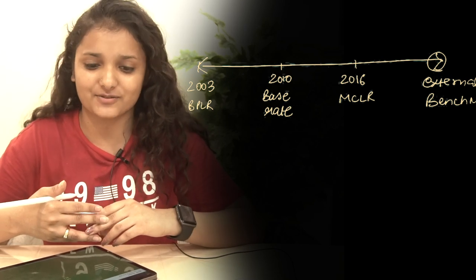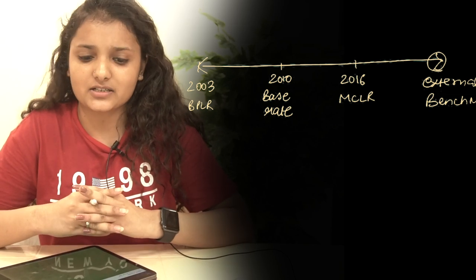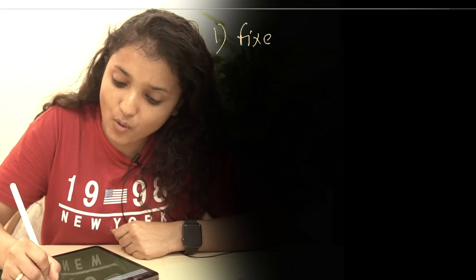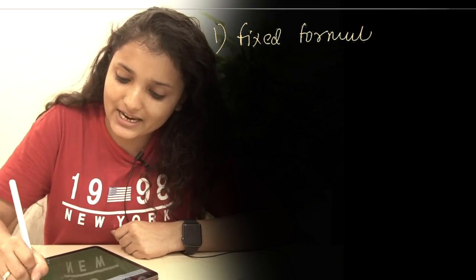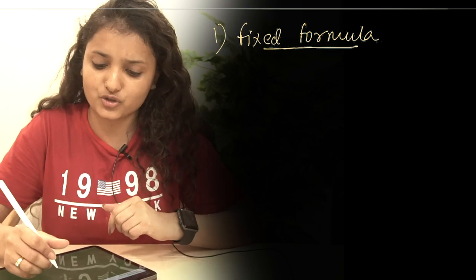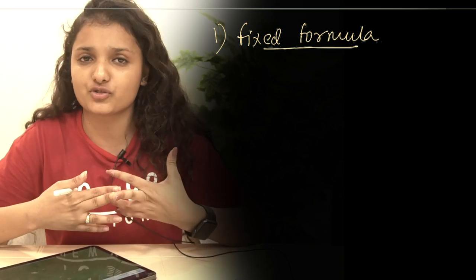Starting with the BPLR system — BPLR stands for the Benchmark Prime Lending Rate, and it was introduced in April 2003. By definition, it is a basic and minimum interest rate which can be offered to the most credit-worthy customers of the bank. This system was not perfect. The first point is that there was no fixed formula prescribed by the RBI, so any bank could charge any rate from different customers — the tagline 'different rate for different customers' would be suitable for this system.